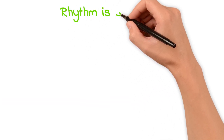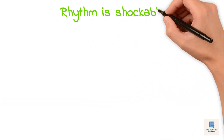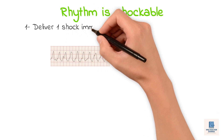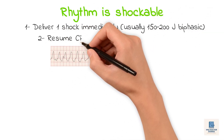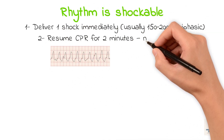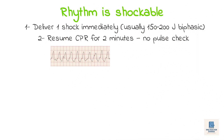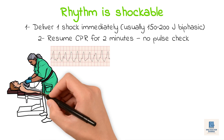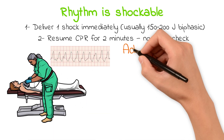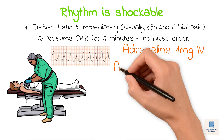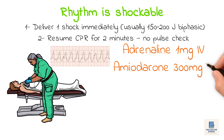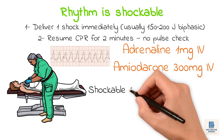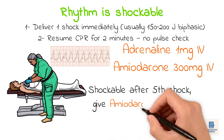If the rhythm is shockable, follow this approach. Deliver one shock immediately, usually 150 to 200 joules biphasic. Resume CPR for two minutes — no pulse check. After the third shock, give adrenaline 1 mg IV and amiodarone 300 mg IV. If still shockable after the fifth shock, give amiodarone 150 mg IV.